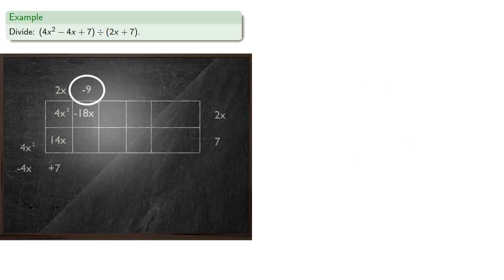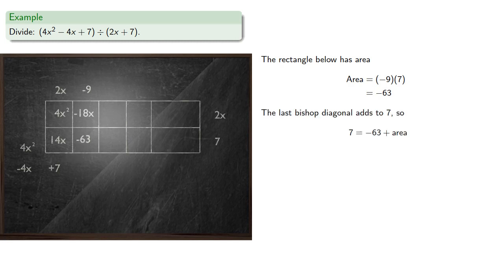Again, we know the width of this next column, so we can find the area of the rectangle below, which will be negative 63. And the last bishop diagonal must add to 7. And so that means 7 is the sum of negative 63 plus the area of this rectangle, which must be 70.